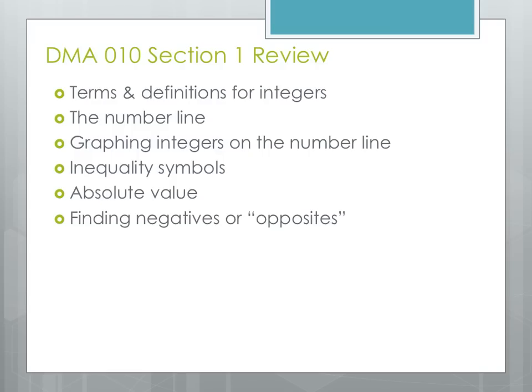That finishes up the material for Section 1 of DMA 10. To review: we covered terms and definitions of integers, the number line and graphing numbers on it, inequality symbols, absolute value, and finding the negatives or opposites of numbers. After finishing your homework for this section, feel free to start the videos for DMA 10 Section 2, where we'll look at how to add and subtract positive and negative numbers.